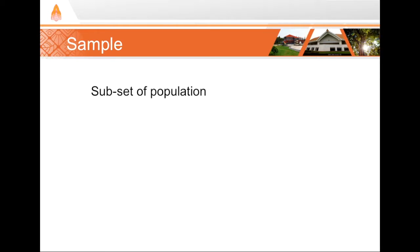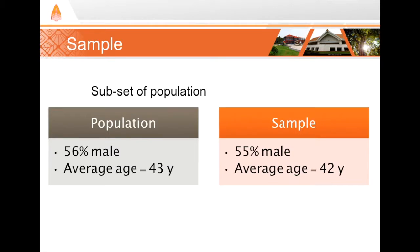If our sample has the same demographics as the population, we can consider it a representative sample. For example, if our population — all Virginia Republican voters who cast ballots in the spring 2016 primary — has a demographic cross-section that is 56% male with an average age of 43 years, and our sample also has around 56% male and an average age of around 43 years, then our sample is representative of the population. Sampling strategies are an important component of research design, and an improper sampling strategy could introduce significant bias or error into our study.